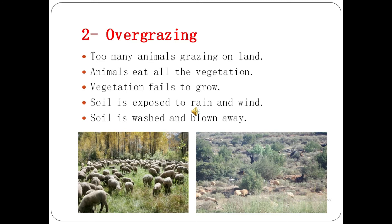The second main factor is overgrazing. Overgrazing occurs when there are too many animals grazing on a specific area of land. This causes the soil to erode. Animals eat all the vegetation, and vegetation fails to grow. The soil is then exposed to rain and wind, and blown away, resulting in barren land.